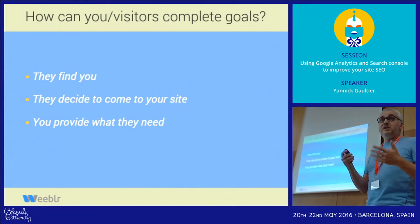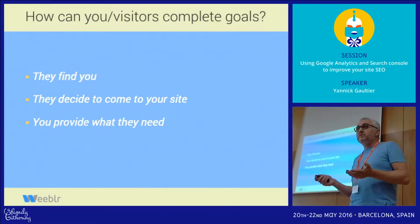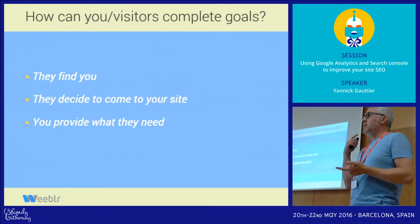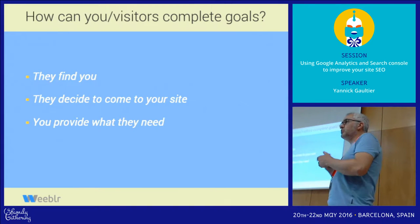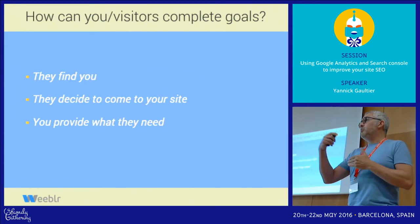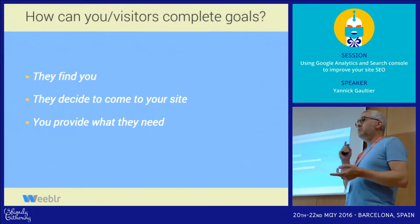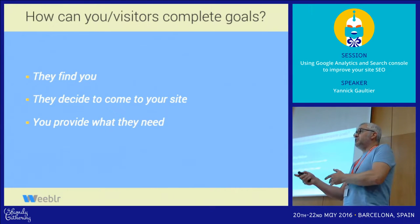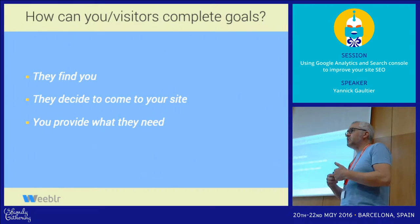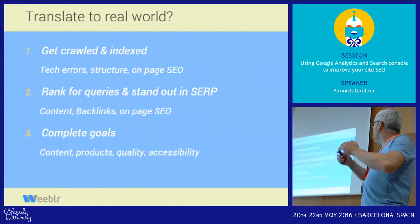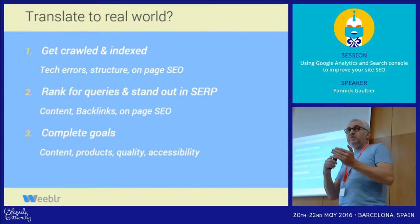How can this be improved? We found there are three steps. Users have to find you first — if they don't know about you, there's just no way they'll come to your site and complete goals. If they find you and become aware of your existence, then they need to decide to come to you. That's the second step. And then, eventually, you need to deliver — if they come to your site, you need to deliver.